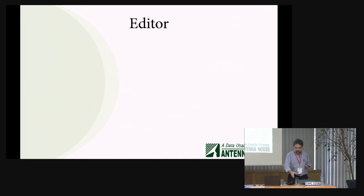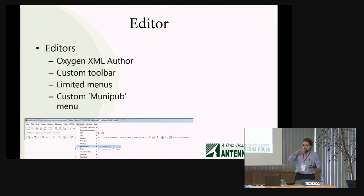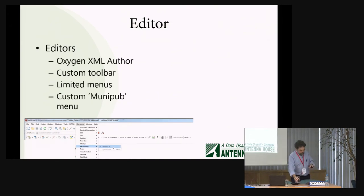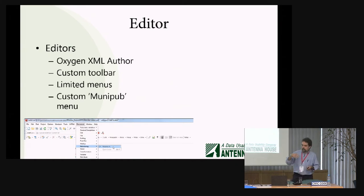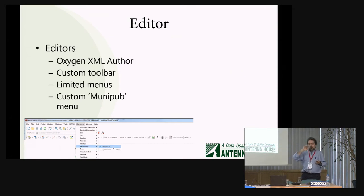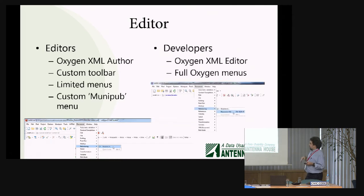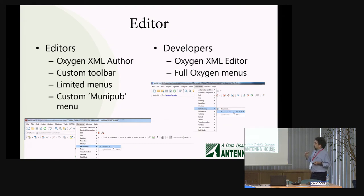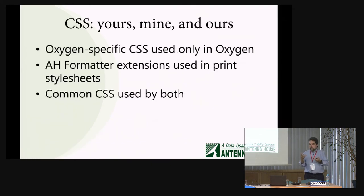This project includes editor customizations. Human editors use Oxygen XML Author with custom toolbars, limited menus, and a Munipub menu for checking out jobs from the Git repository, with details hidden from them. Shortly afterwards, the development team said they like the Munipub menu, but need to put back everything else so they have full control for their editing. One quick email to Oxygen support and there was an answer for controlling this based on the Oxygen version.